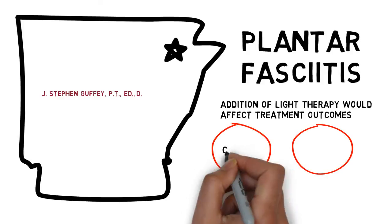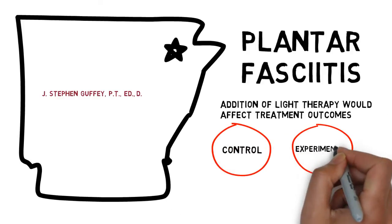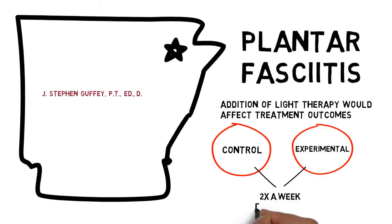Subjects were randomly assigned to either a control or experimental group and treated twice a week for four weeks.